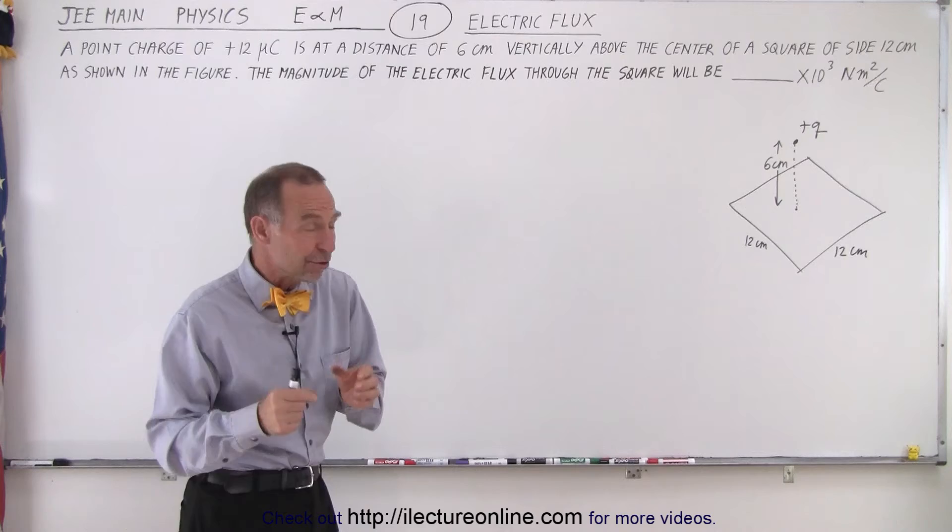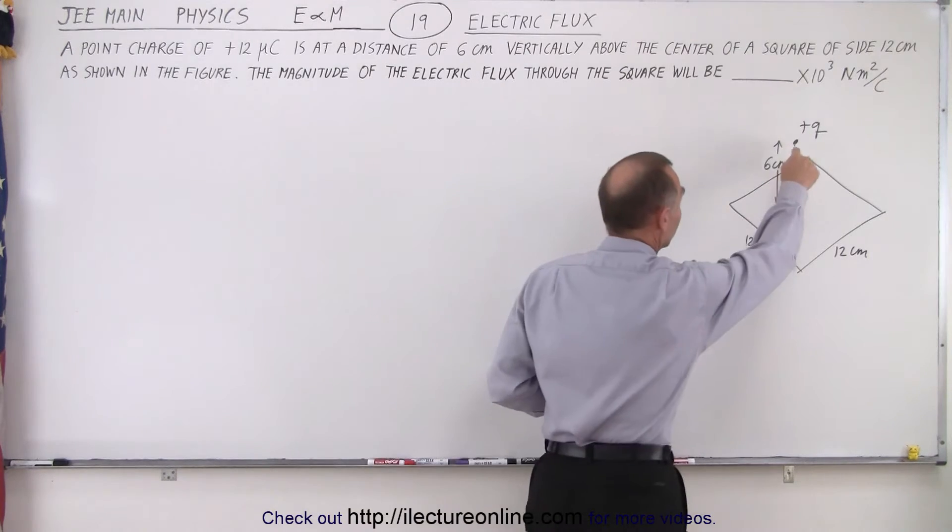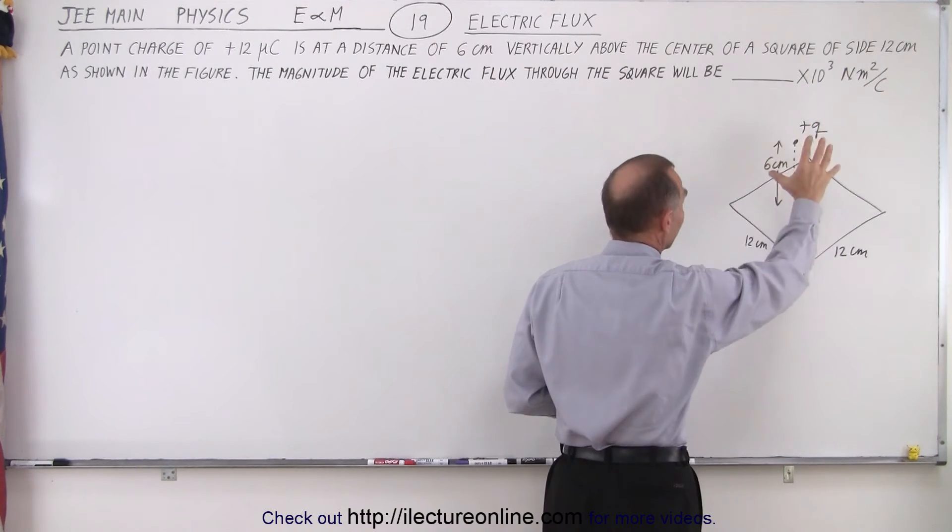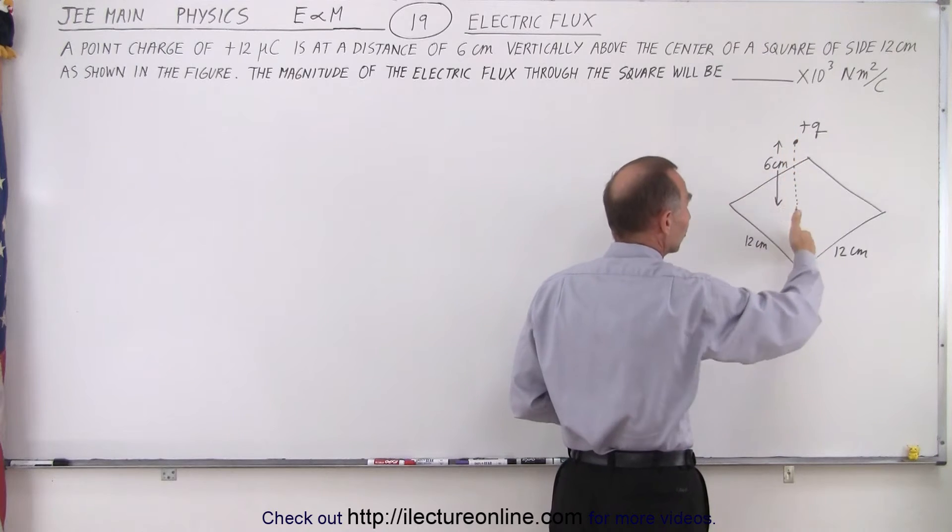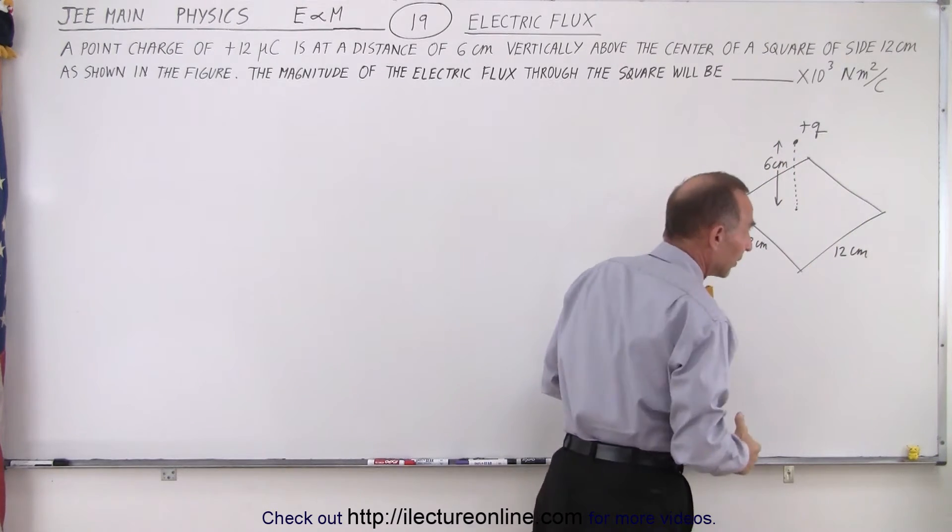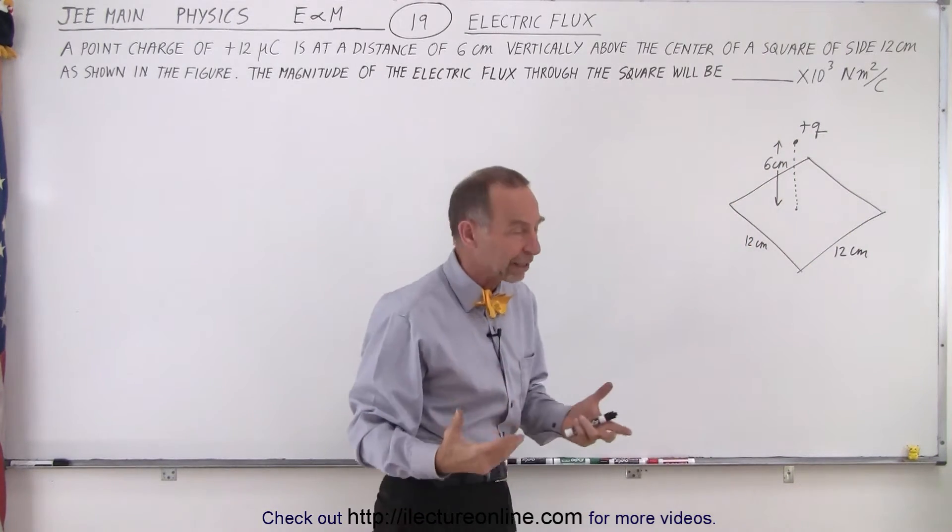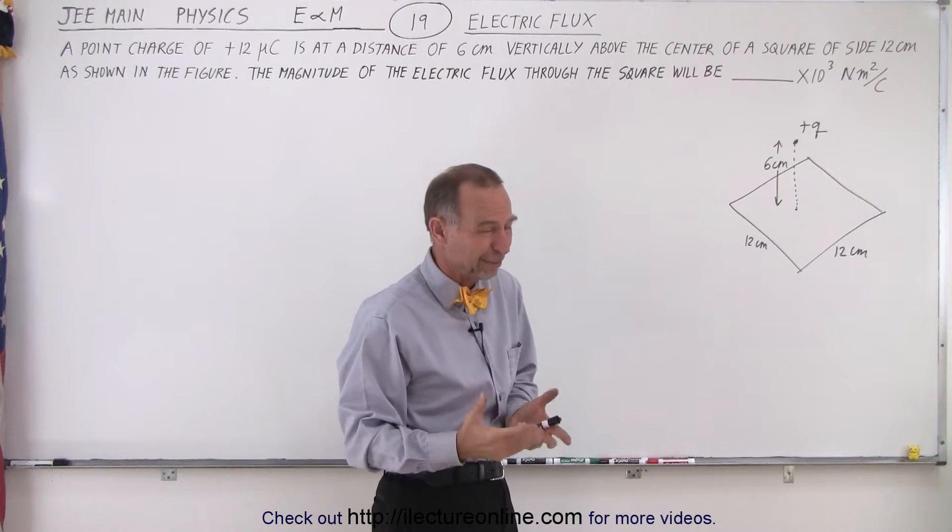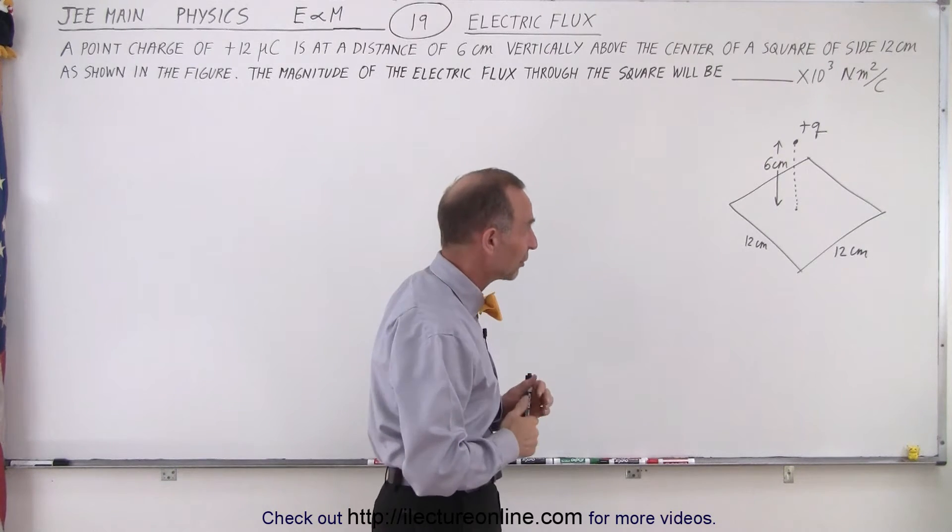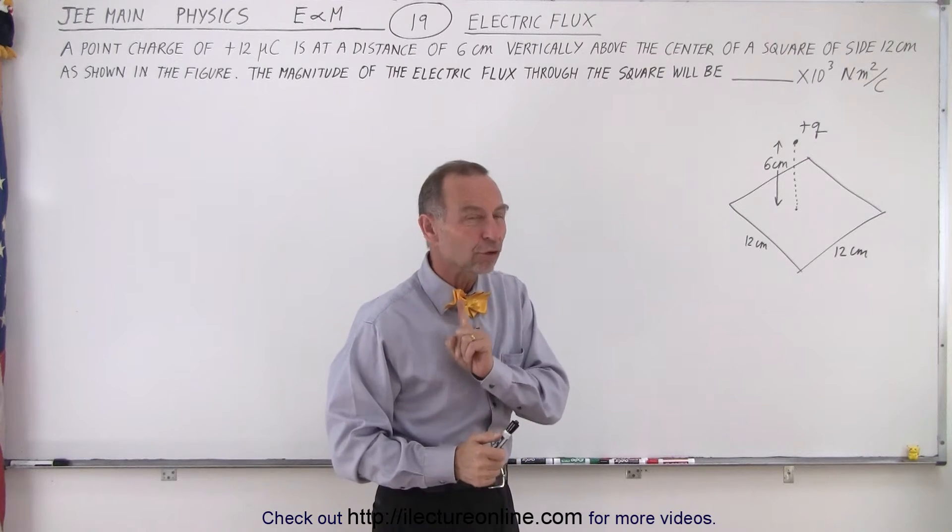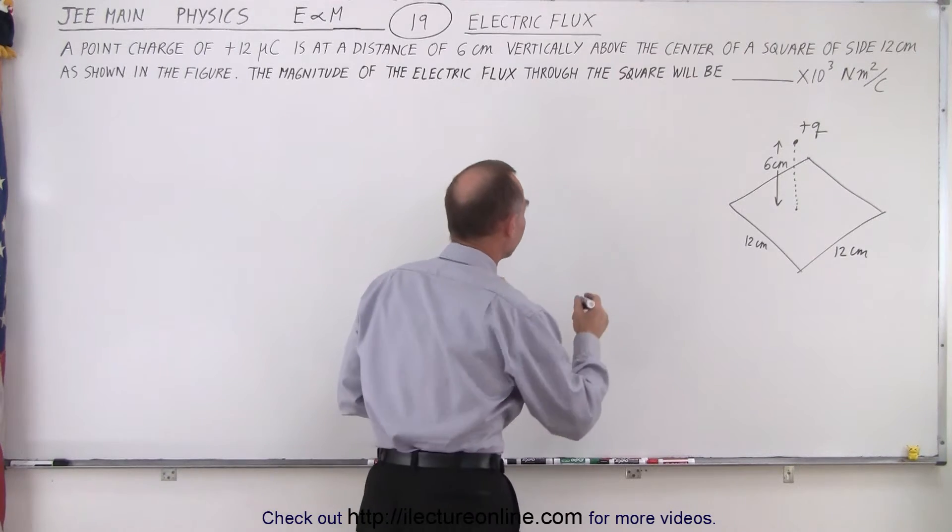So the first reaction you might have is, well, you have a point charge. You calculate the electric field. Then you calculate how much of the electric field goes through the square. And then you take that electric field divided by the area and you get the flux. But that would be a very difficult way to do it. Instead, we can use Gauss's law by doing the following.